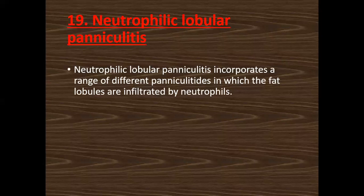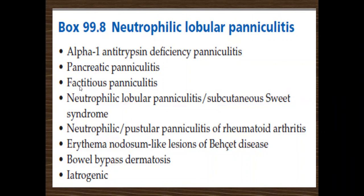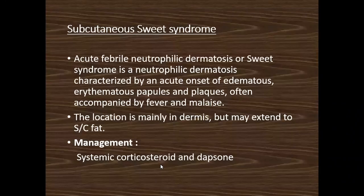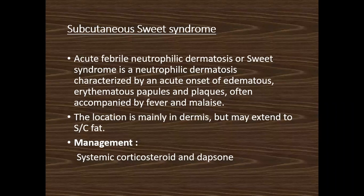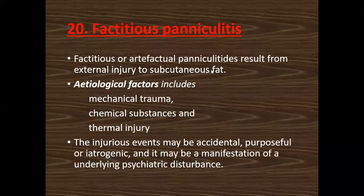Neutrophilic lobular paniculitis incorporates a range of paniculitis in which fat lobules are infiltrated with neutrophils. In addition to alpha-1 antitrypsin and pancreatic paniculitis, it also includes fictitious paniculitis, SWEET syndrome, Behçet's disease, and bypass dermatosis. Subcutaneous SWEET syndrome usually involves the dermis with dermal edema and dense neutrophilic infiltrate with or without vasculitis; however, in subcutaneous SWEET syndrome, these changes occur in the subcutaneous fat, with erythematous plaques, fever, and malaise. Management is similar to normal SWEET syndrome.